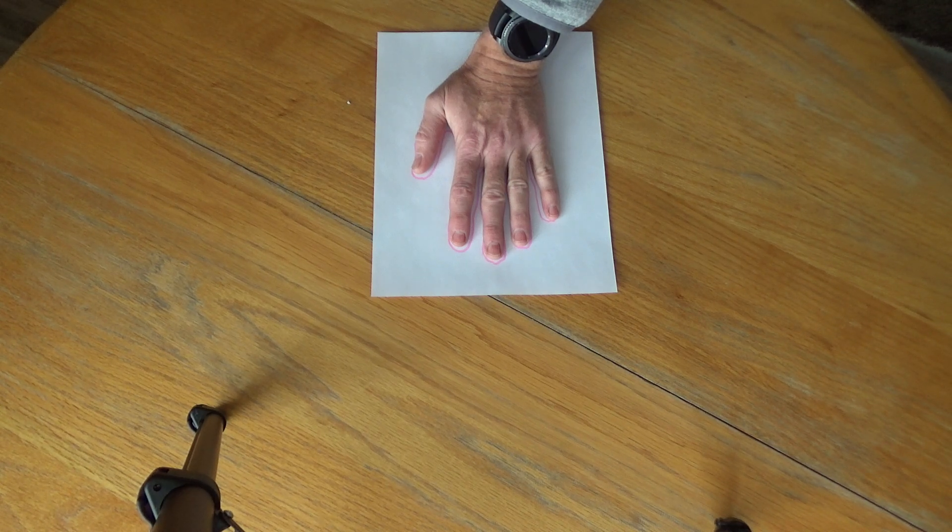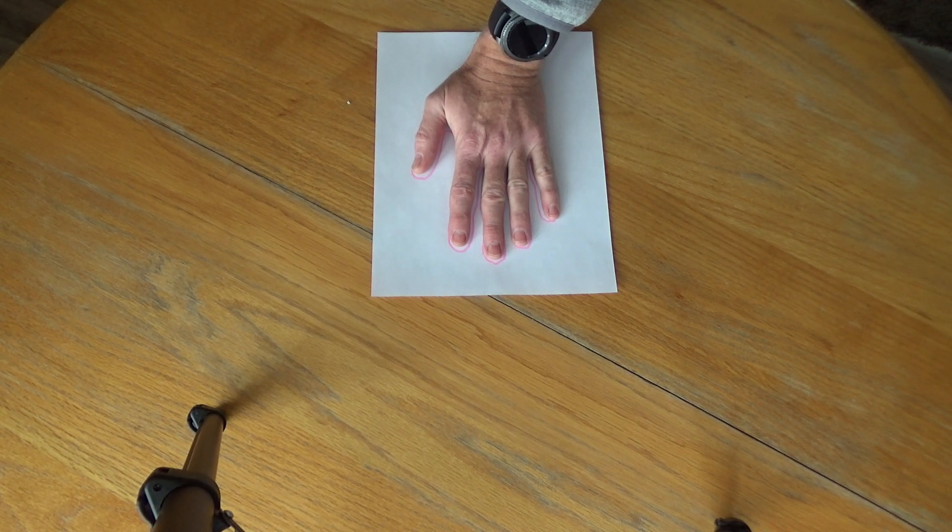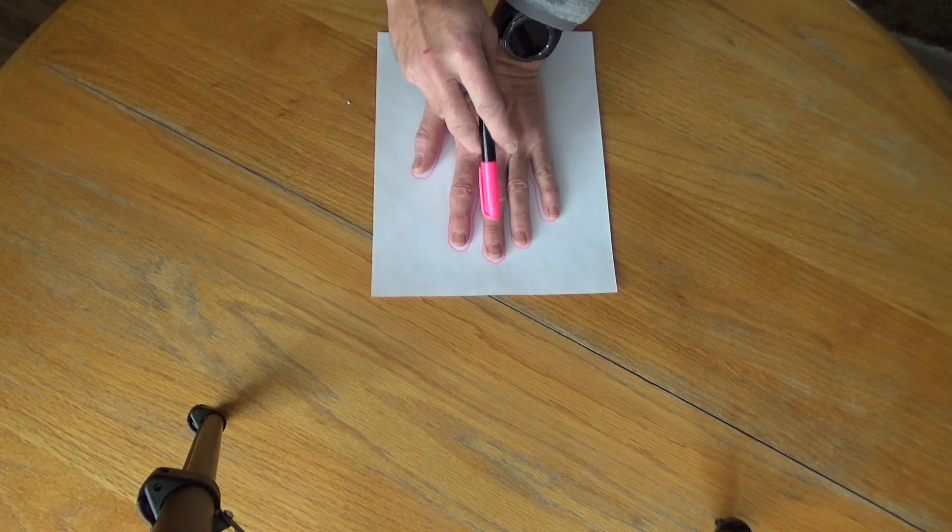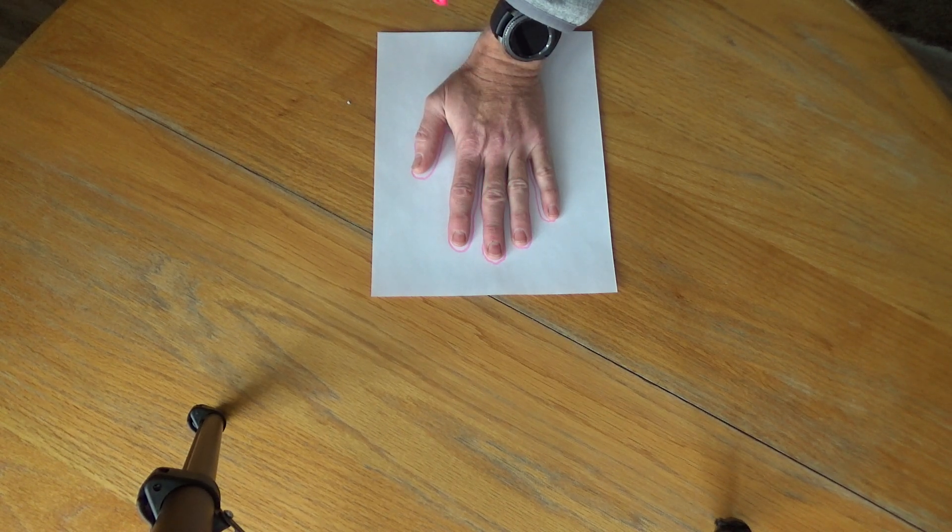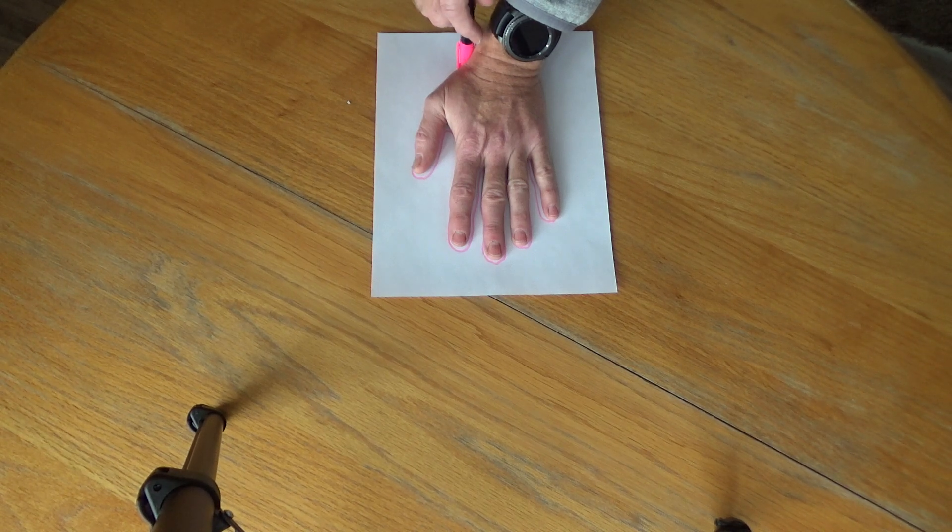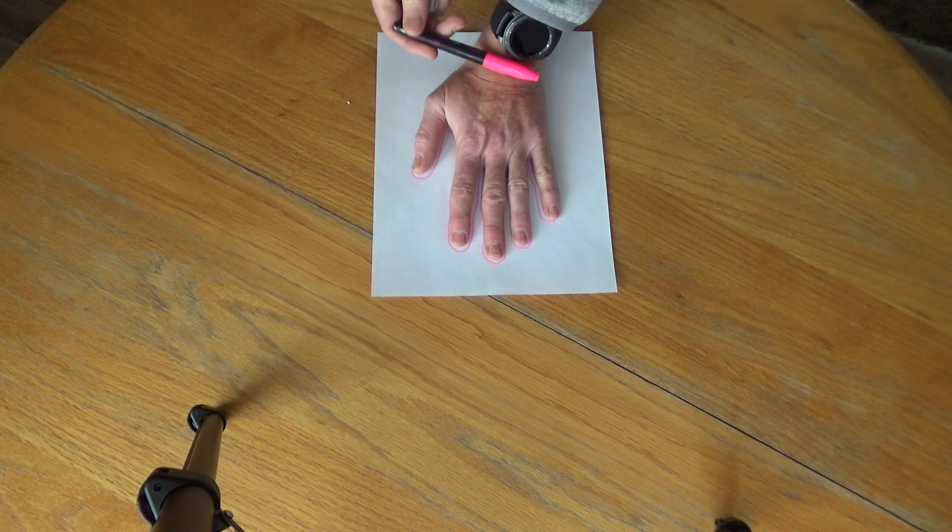The important part of this is making sure that you get the middle finger, the second finger from the right, this finger here, the tip of that, and you go all the way down to where your wrist ends. So right here, this part here.